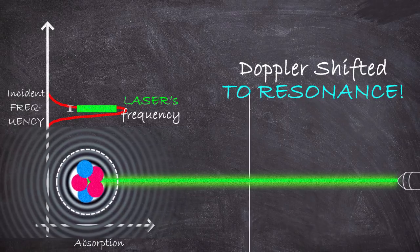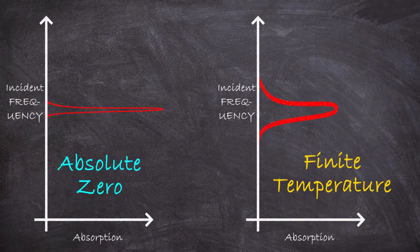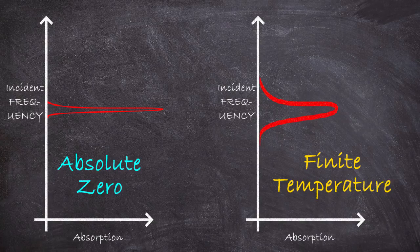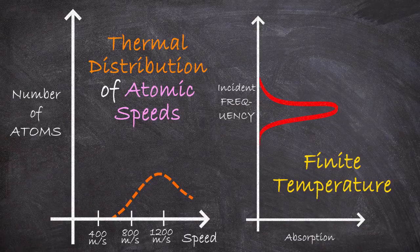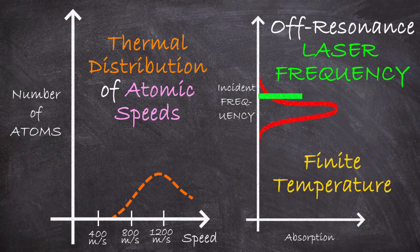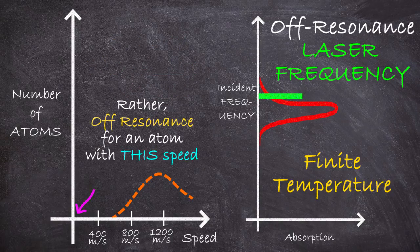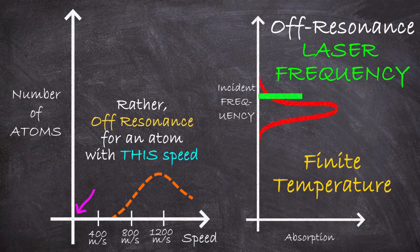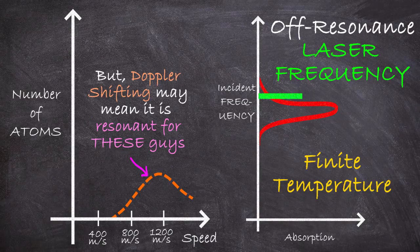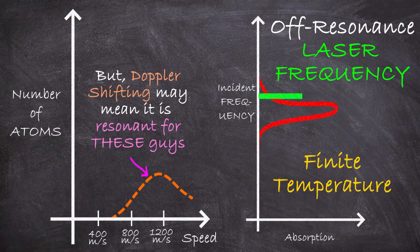This, by the way, is also one of the main reasons for this broadening of energy levels that high temperature causes that we talked about previously. A gas of hot atoms, as we discussed, has a distribution of speed and direction. So if I shine in a laser that is off-resonance for a stationary atom, there may still be atoms in the gas that see it appropriately red or blue shifted, such that for them, it is resonant, and they absorb it. We call this Doppler broadening.